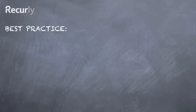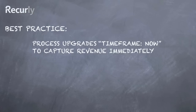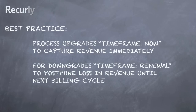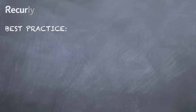Now let's take a look at how Recurly helps you manage the financial side of upgrades and downgrades. When a customer upgrades and wants to pay you more money, you want to make that happen immediately, so we suggest that you specify the time frame as now. Whereas if they downgrade, you have the ability to specify that change to occur on the next billing cycle, so you specify time frame renewal. Let's take a look at a specific example of this.